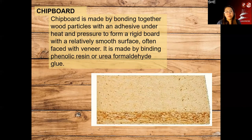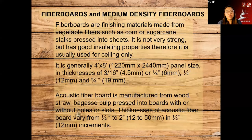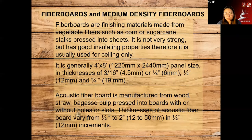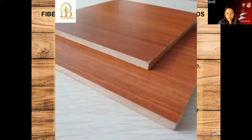We have chip board, made by bonding together wood particles with adhesive under heat and pressure. Then we have fiber cement board or fiber boards — finishing materials made from vegetable fiber such as corn and sugar cane. Usually available in 4x8 or 1.2x2.4 meters. Thickness is 3/16, 1/4, or 1/2 to 3/4 inch.